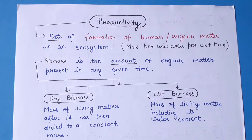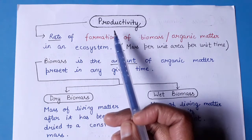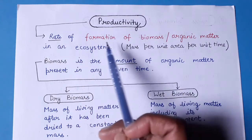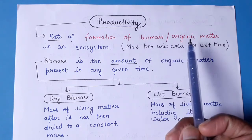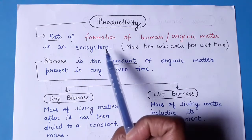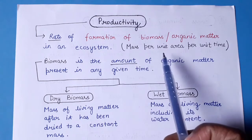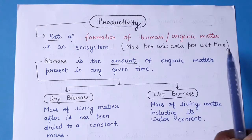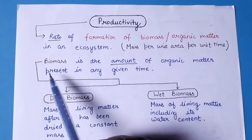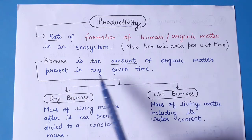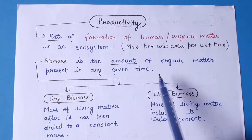Hello everyone, welcome to my channel all about biology. This is Jyoti Varma. Today we will discuss about productivity, which refers to the rate of formation of biomass or organic matter in an ecosystem. It is expressed in mass per unit area per unit time. Biomass refers to the amount of organic matter present at any given time.